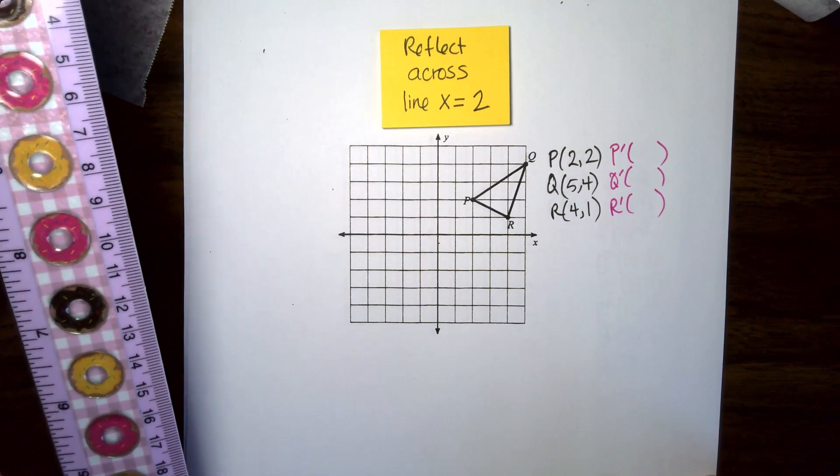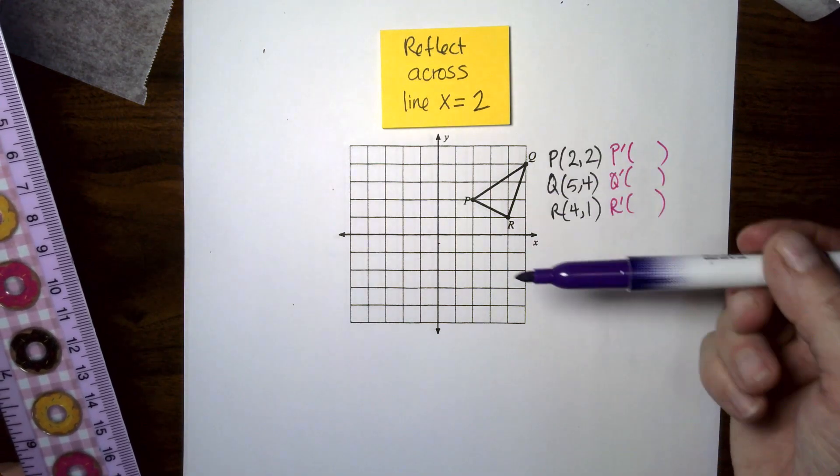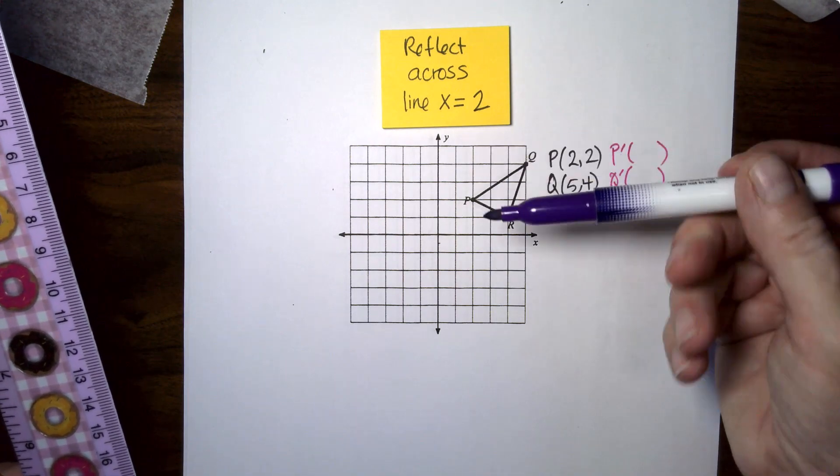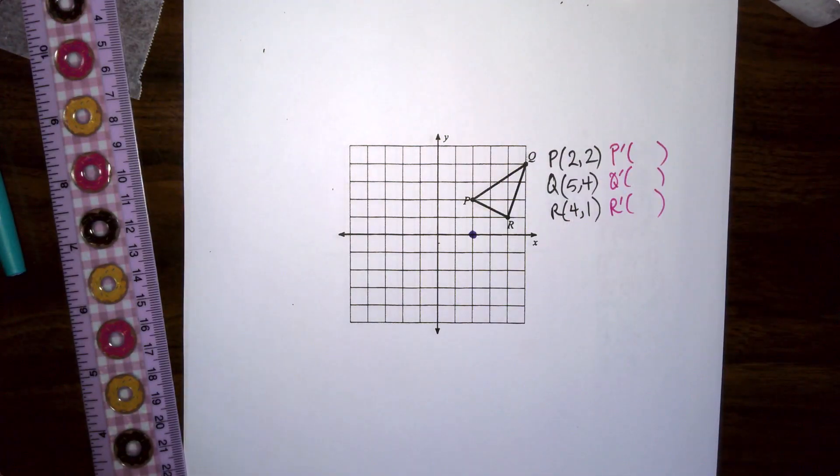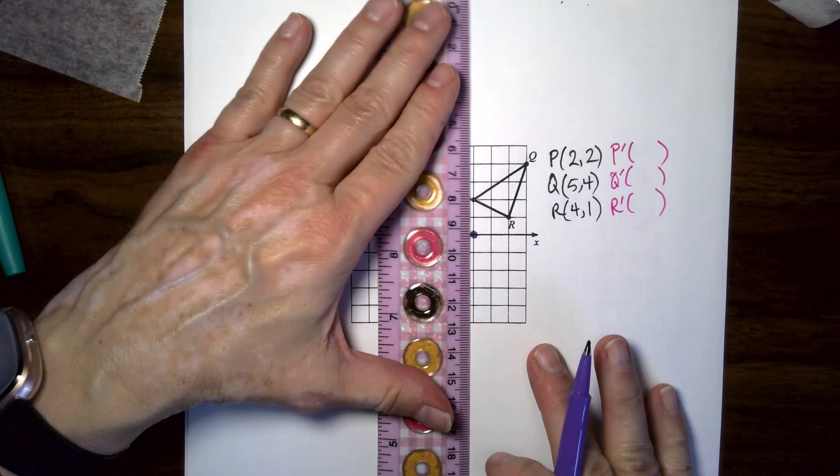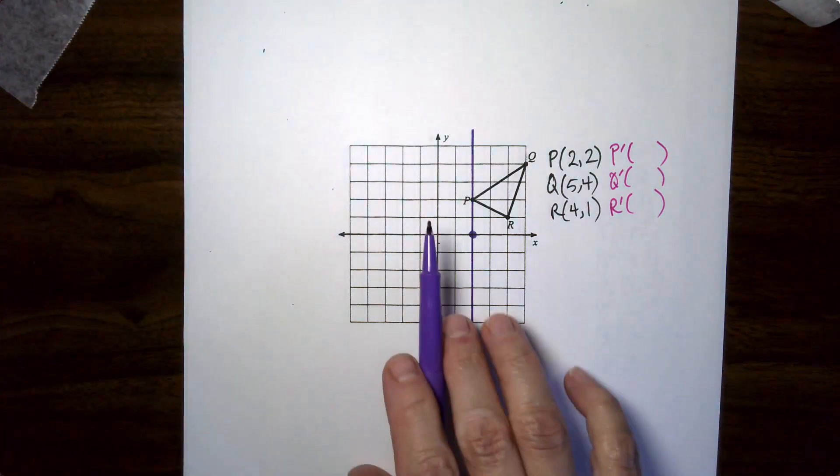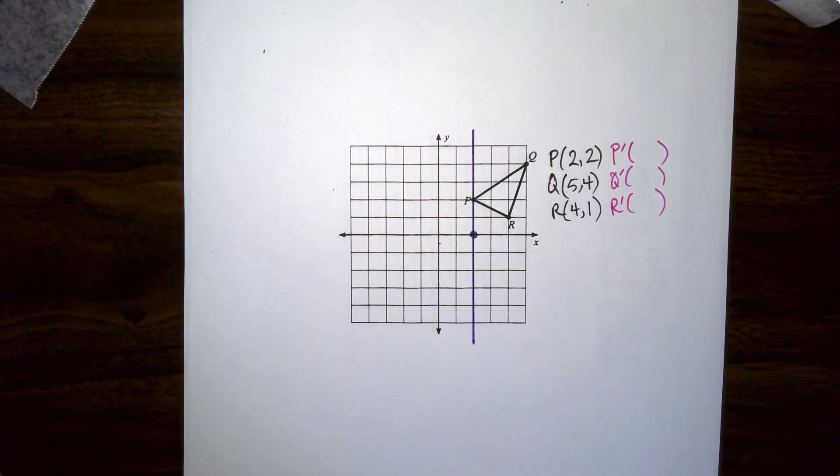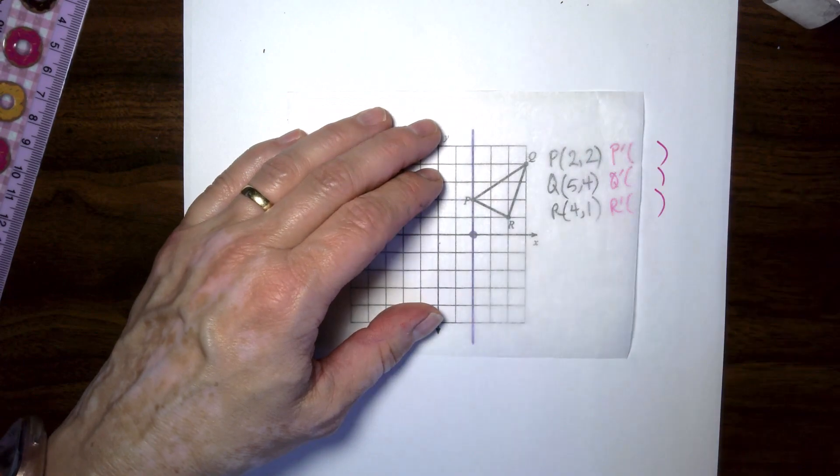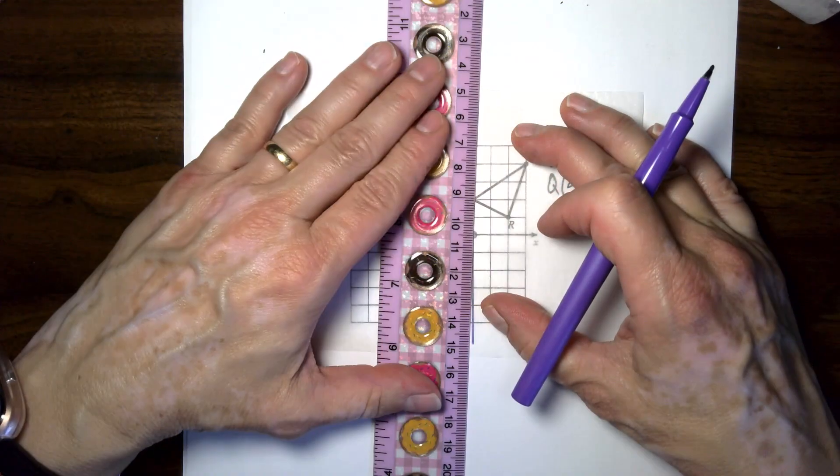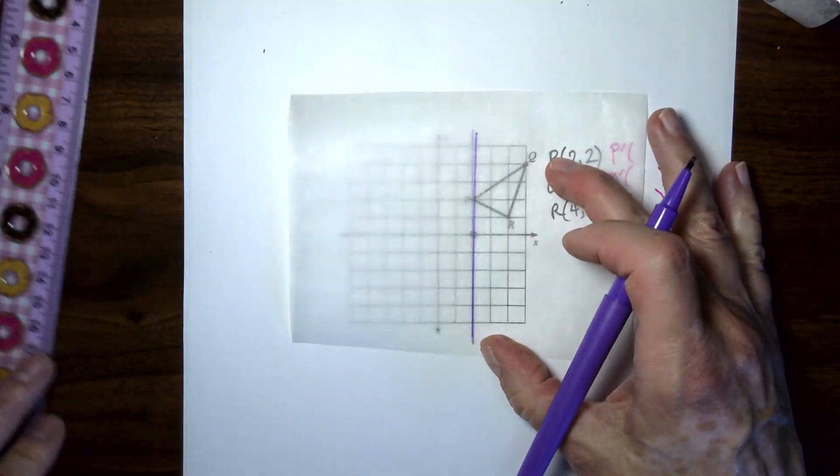So X equals two is where the side to side movement is held constant at two. There's no, the Y can be anything. This is going to be a vertical line and it's at the place where X equals two, which is right there. So I am going to draw a purple line going up and down. That's our new mirror. So instead of going across this axis, we're going to go across that line and we're going to be flipping it this way. We have a different line to reflect across. So I'm going to draw it again.